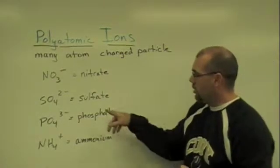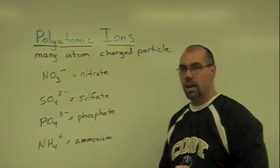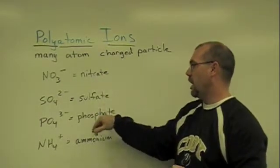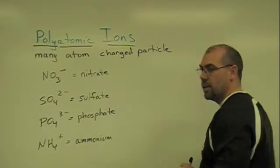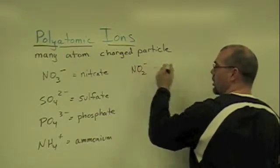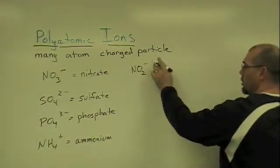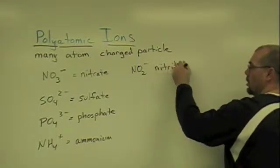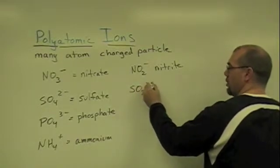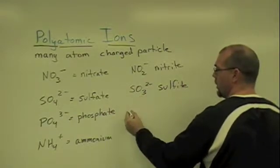Notice that it's not like -ate defines how many oxygens there are. But what you can do is separate things that end in -ate from polyatomic ions that end in -ite because -ites will have less oxygen. NO2 is nitrite. SO3 that also has a charge of negative two is sulfite.